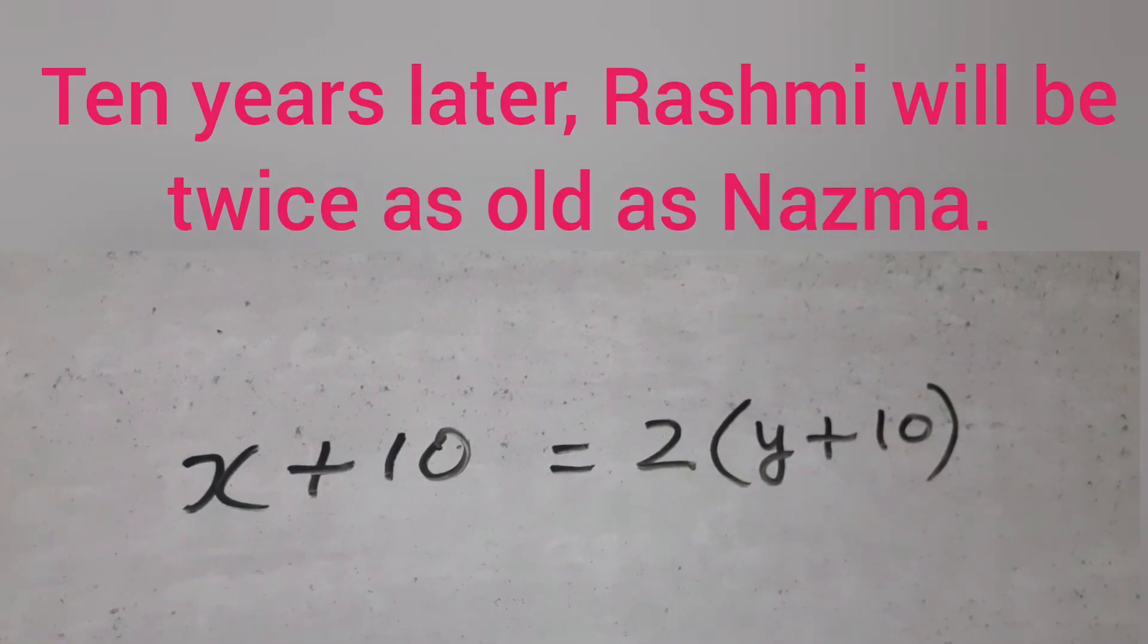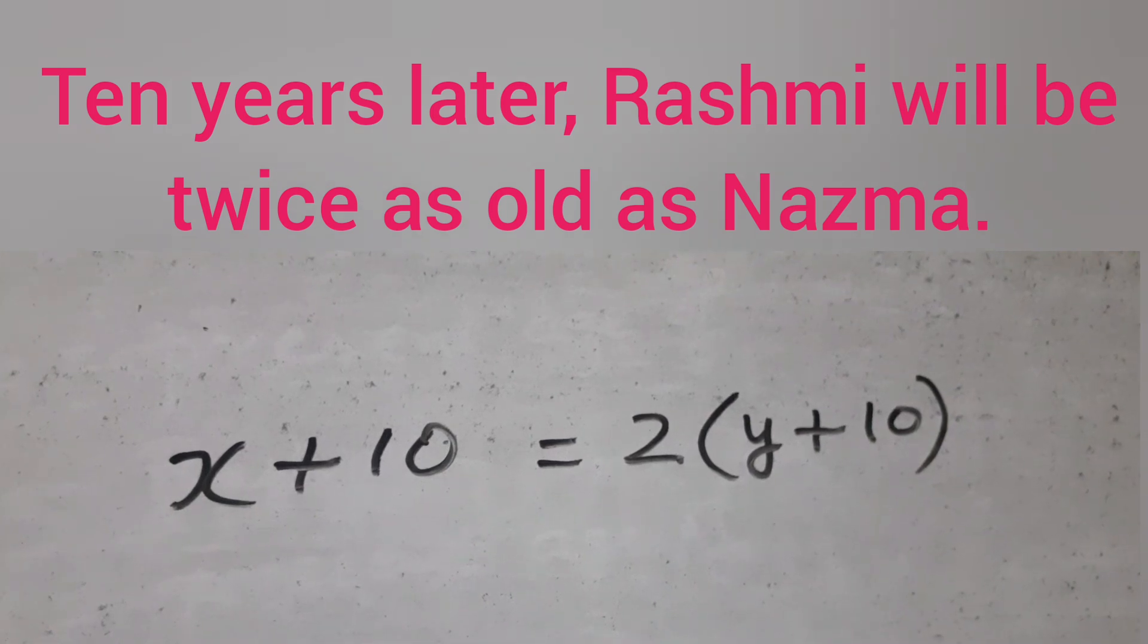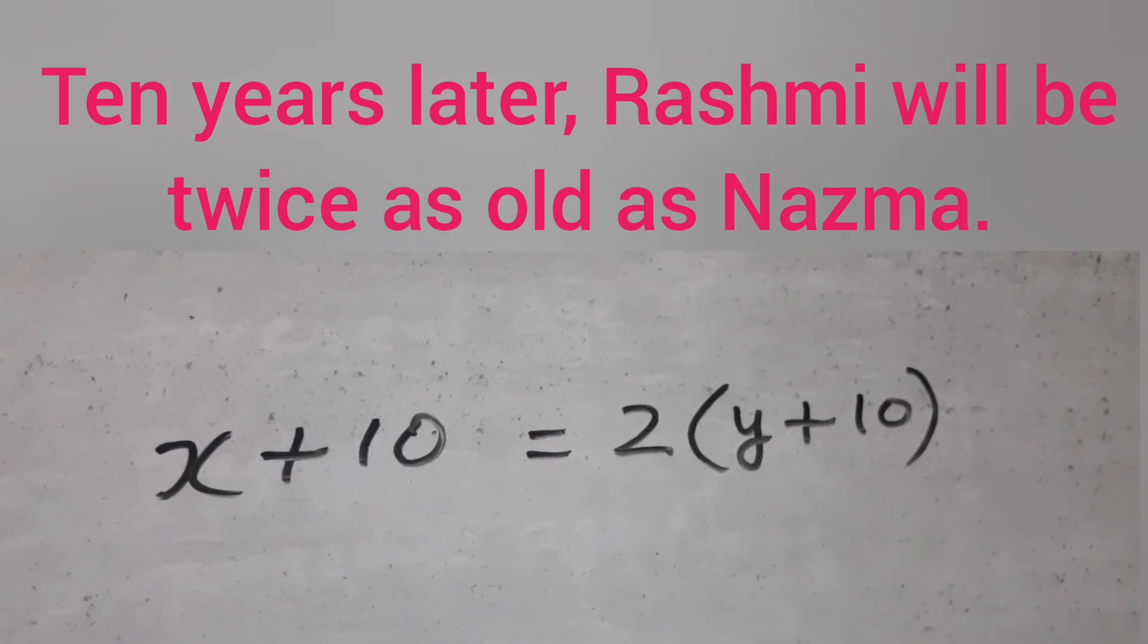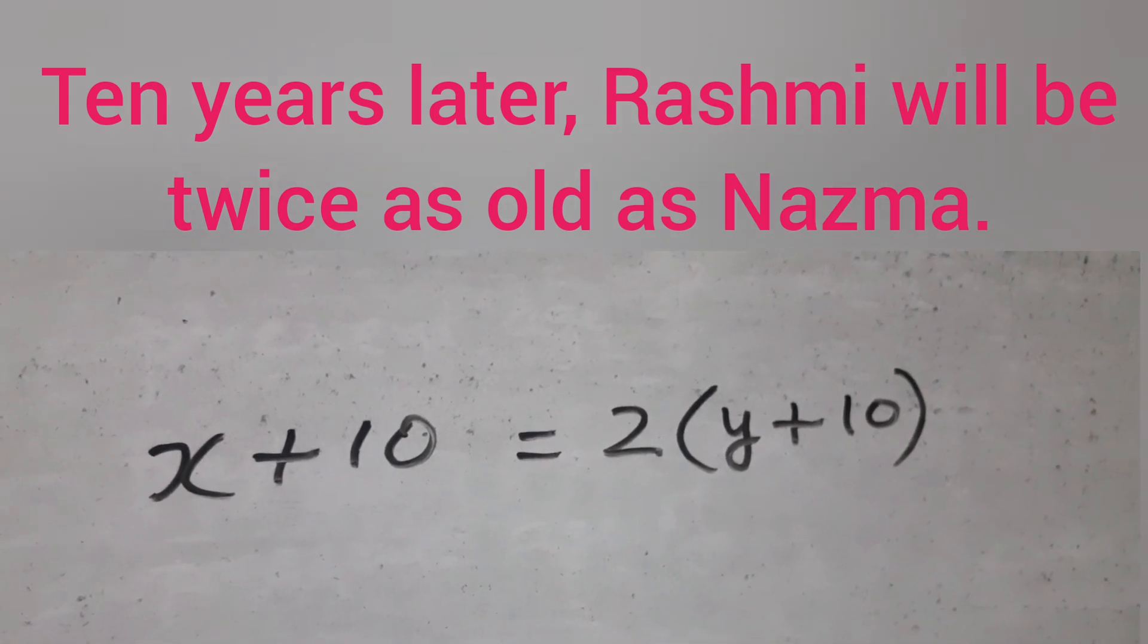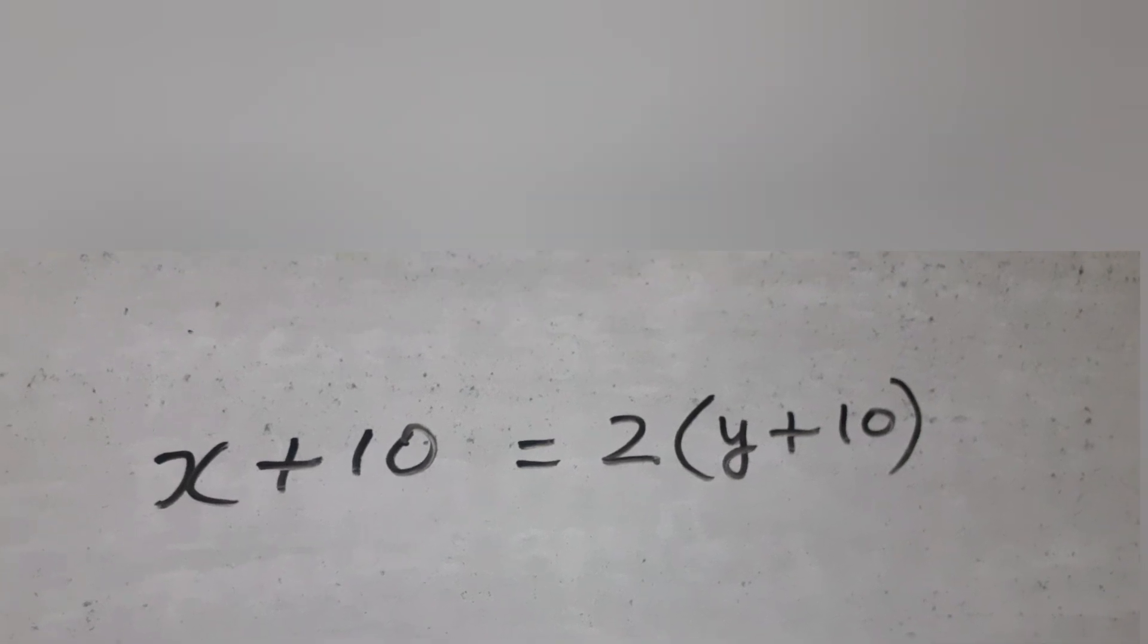As before, after 10 years, the ages would be x plus 10 and y plus 10 respectively. Using the given condition, x plus 10 equal to 2 times bracket y plus 10.